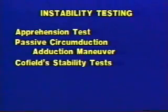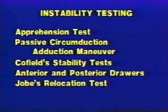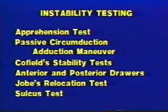The various tests described for examination of shoulder instability attempt to document abnormal translation between the humeral head and glenoid fossa with passive stress applied. The following tests are performed: the classic apprehension test, passive circumduction-abduction maneuver, test for posterior instability, Coffield's translational stability test performed in external rotation both sitting and supine, anterior and posterior drawers tested in the supine position, Jobe's relocation test, and the sulcus test for inferior and multidirectional instability.